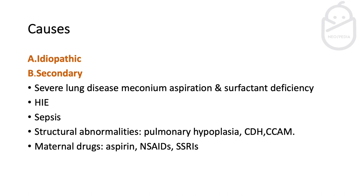The main causes of PPHN are actually idiopathic — we don't know sometimes why it's happening. Most of the time we see it as a secondary result of severe lung disease caused by meconium aspiration or surfactant deficiency. It can also be caused by perinatal asphyxia, HIE cases, and infection. Structural abnormalities such as congenital diaphragmatic hernia, congenital cystic adenomatoid malformation of the lung, or pulmonary hypoplasia can also be responsible, as can maternal drug use like aspirin and non-steroidal anti-inflammatory drugs.